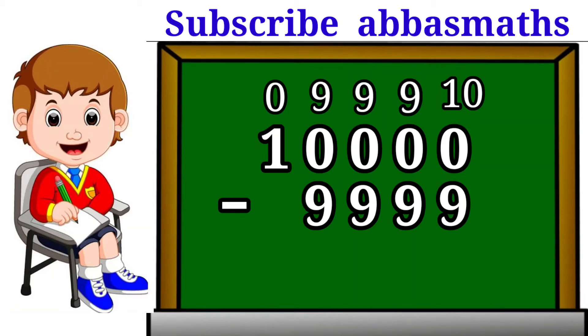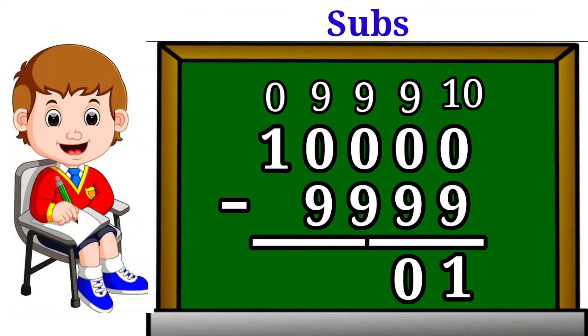9 subtracted from 10 gives equal to 1. Subtract 9 from 9 equal to 0.